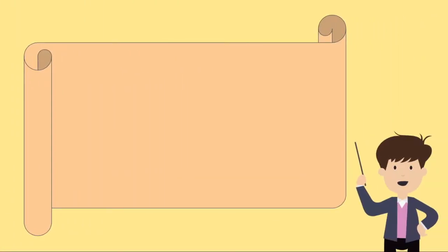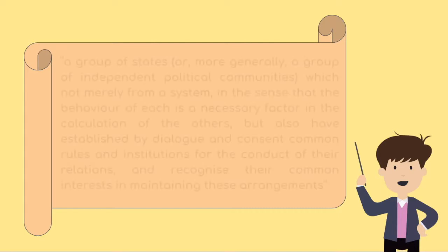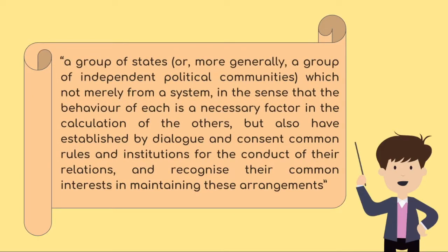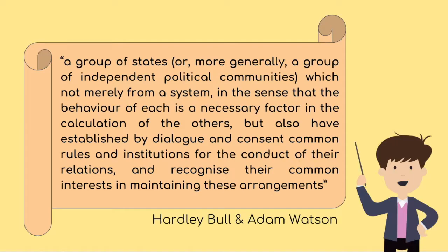There is not a universally accepted definition of what constitutes an international system, and the fact that they have existed for a very wide historical range makes it even more difficult to establish a definition. However, for the purpose of this task, we are going to use the definition provided by Hedley Bull and Adam Watson in The Expansion of International Society, according to which an international system is a group of states, or more generally a group of independent political communities, which not merely form a system in the sense that the behaviour of each is a necessary factor in the calculation of the others, but also have established by dialogue and consent common rules and institutions for the conduct of their relations, and recognize their common interest in maintaining this arrangement.